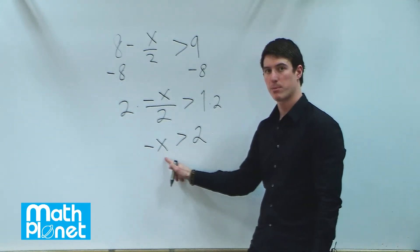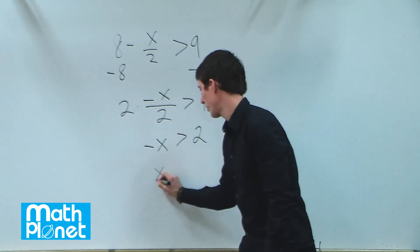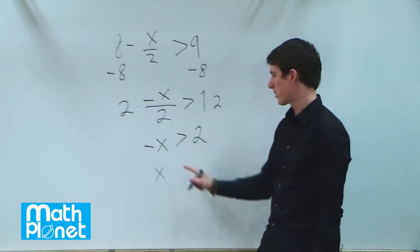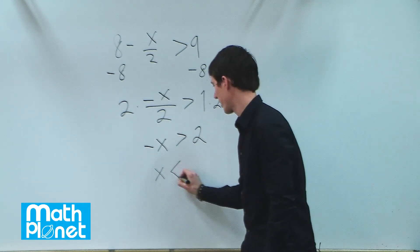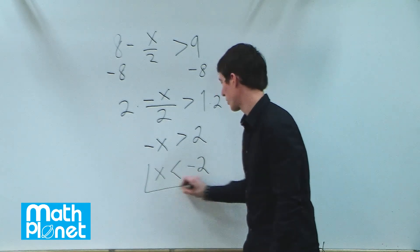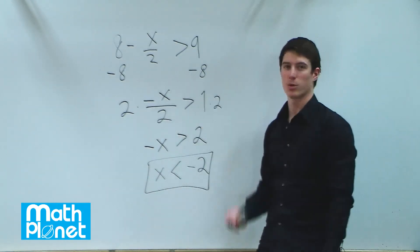So if we divide by negative 1, for example, we'll still have an x all by itself, but this has to change around. It will no longer be negative x is greater than, it will be positive x is less than negative 2. So that is our range of solutions for this inequality.